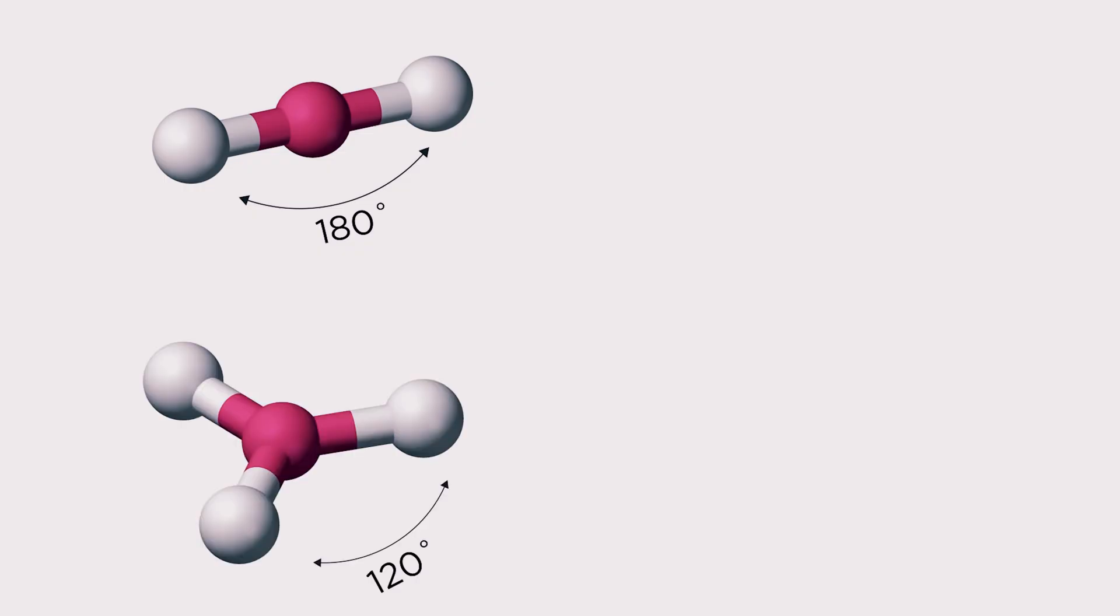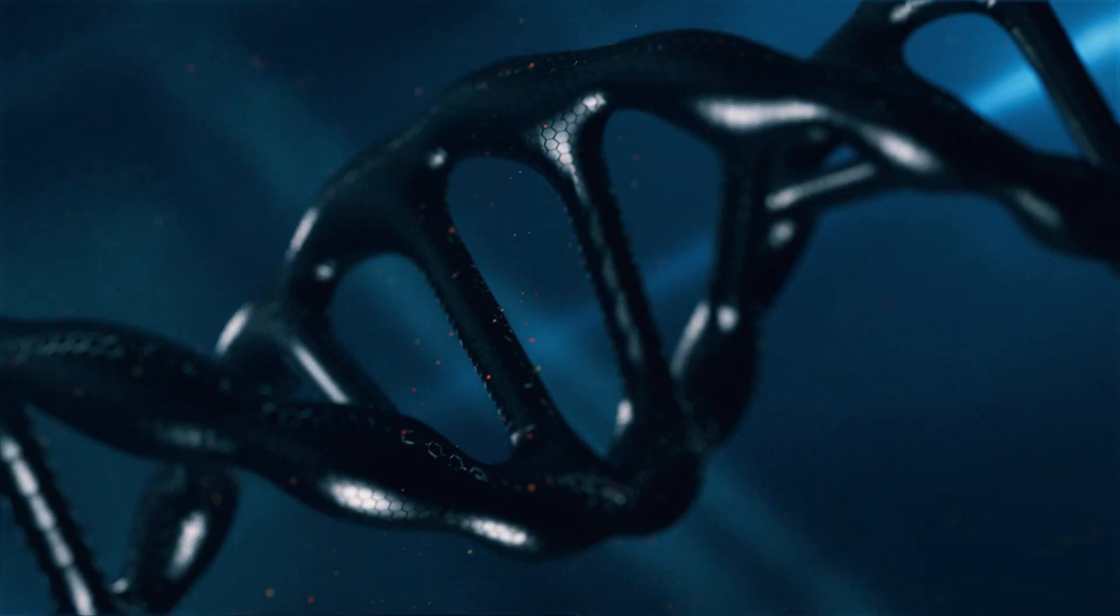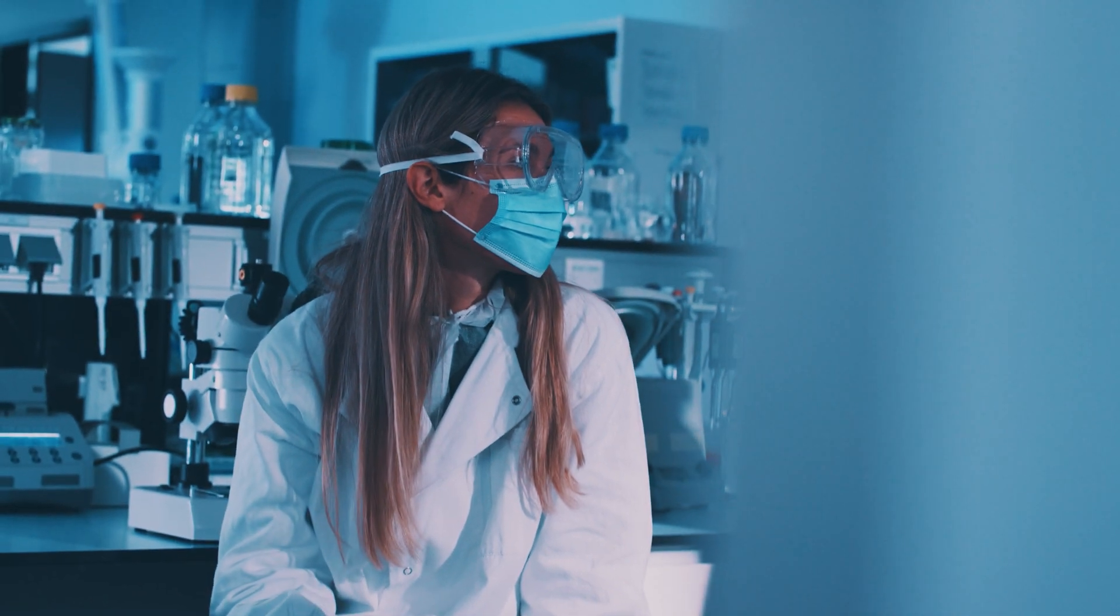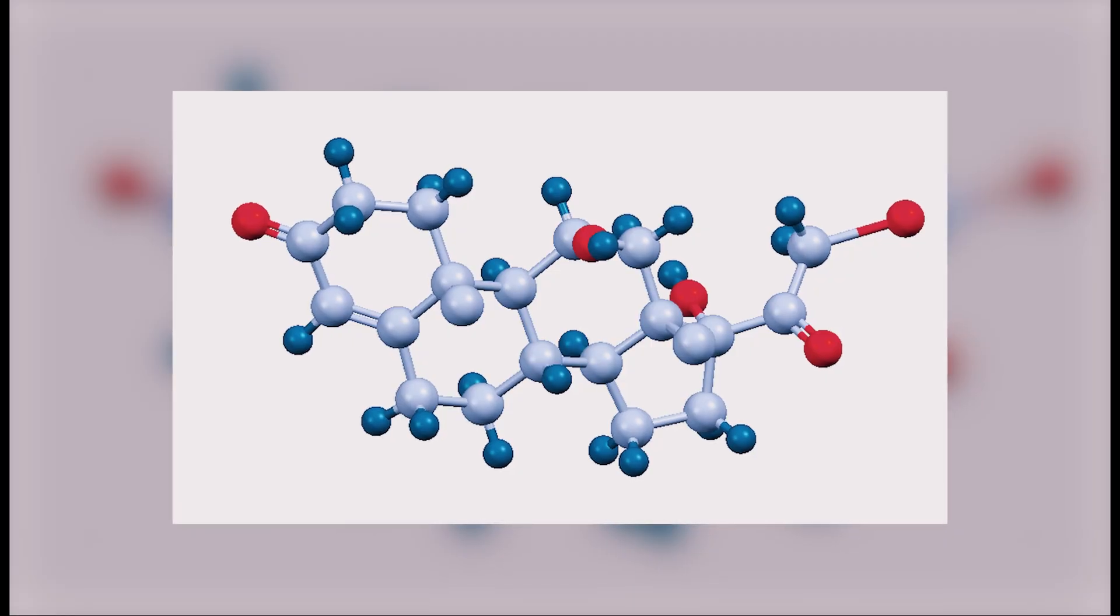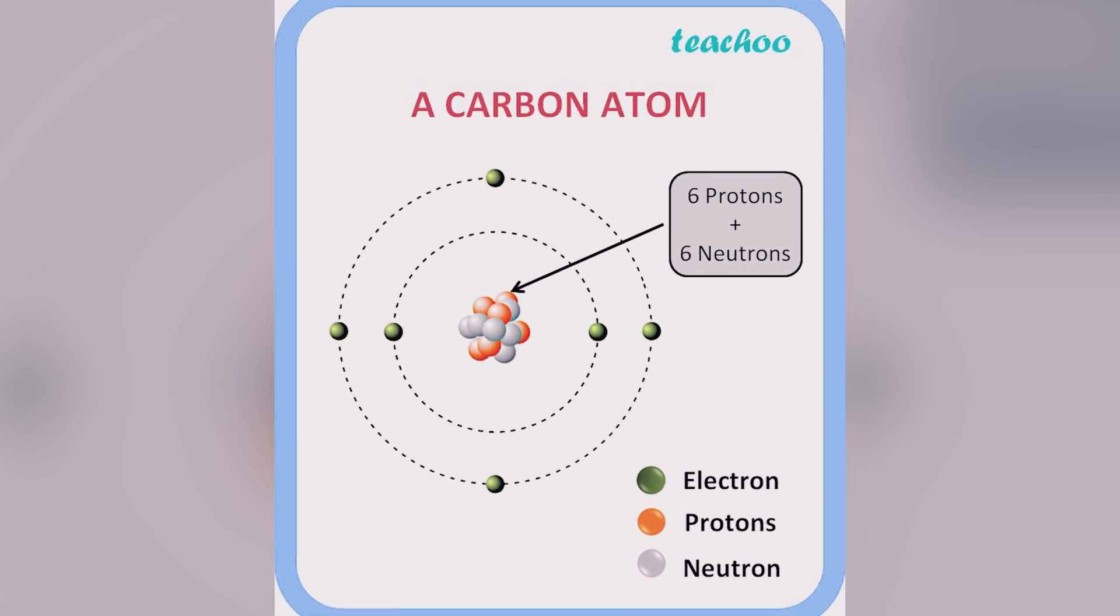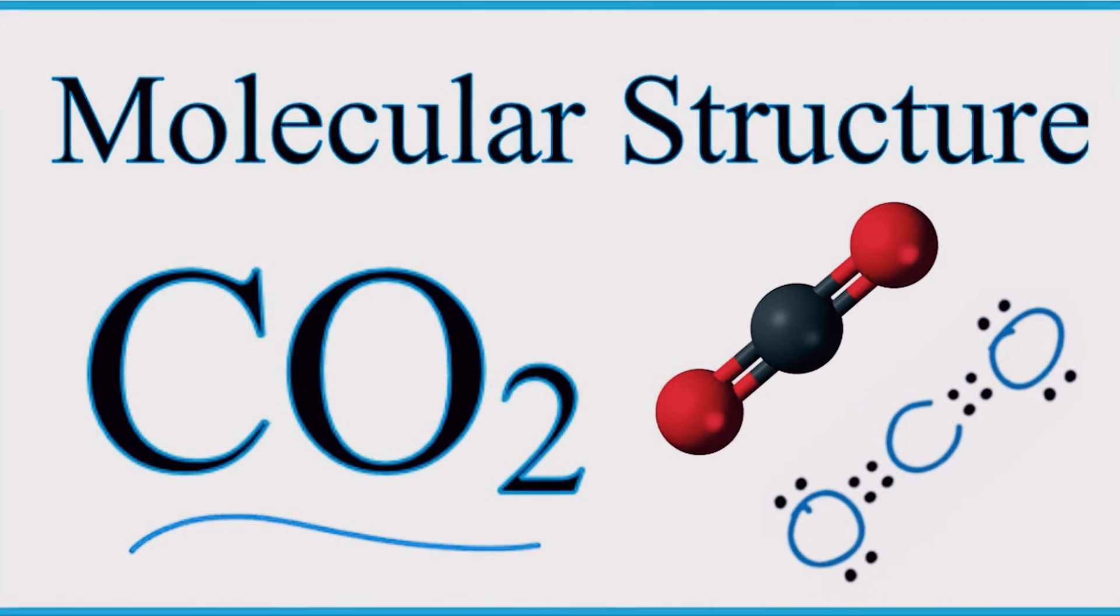In addition to its chemical properties and abundance in the universe, there may be other factors that contribute to carbon being the element of choice for life. For example, some scientists have suggested that the structure of the carbon atom itself may play a role, as its electron configuration allows for a stable octet of electrons in its outer shell.